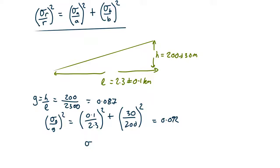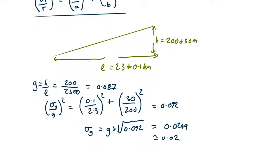So the uncertainty in G is equal to the value of G times the square root of 0.092, which comes out as 0.0249, which we will call about 0.02. So the gradient is 0.09 plus or minus 0.02.